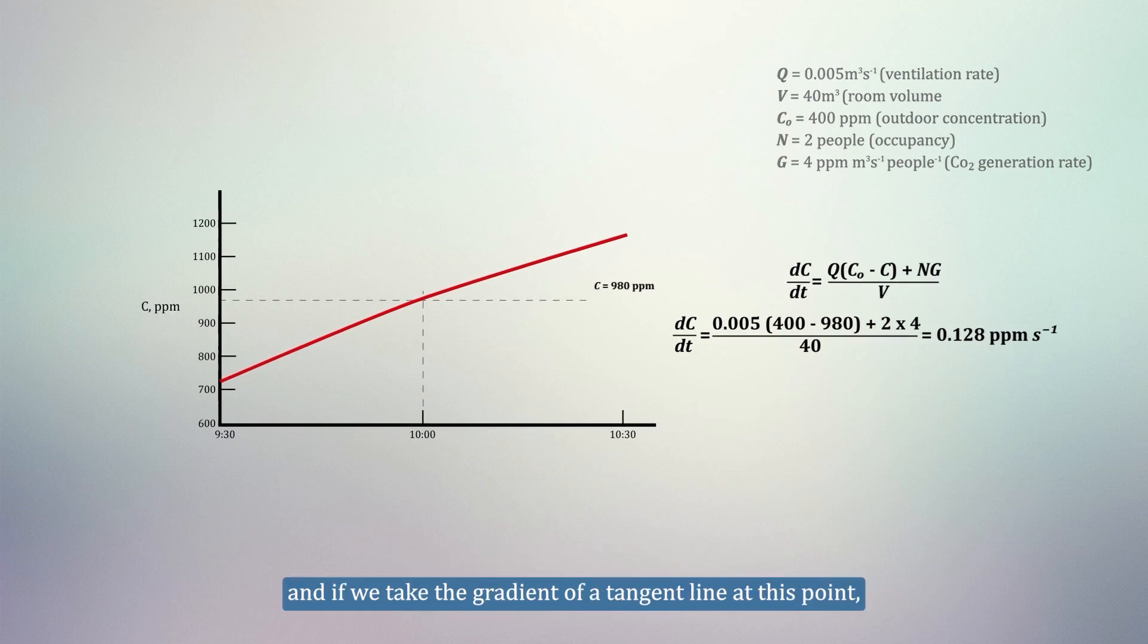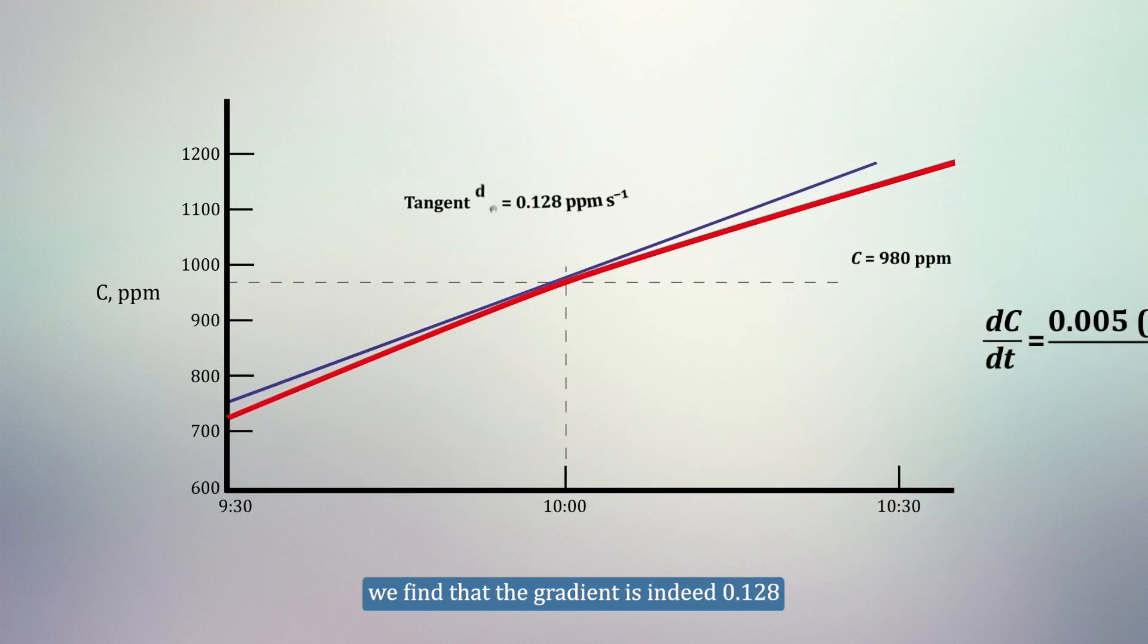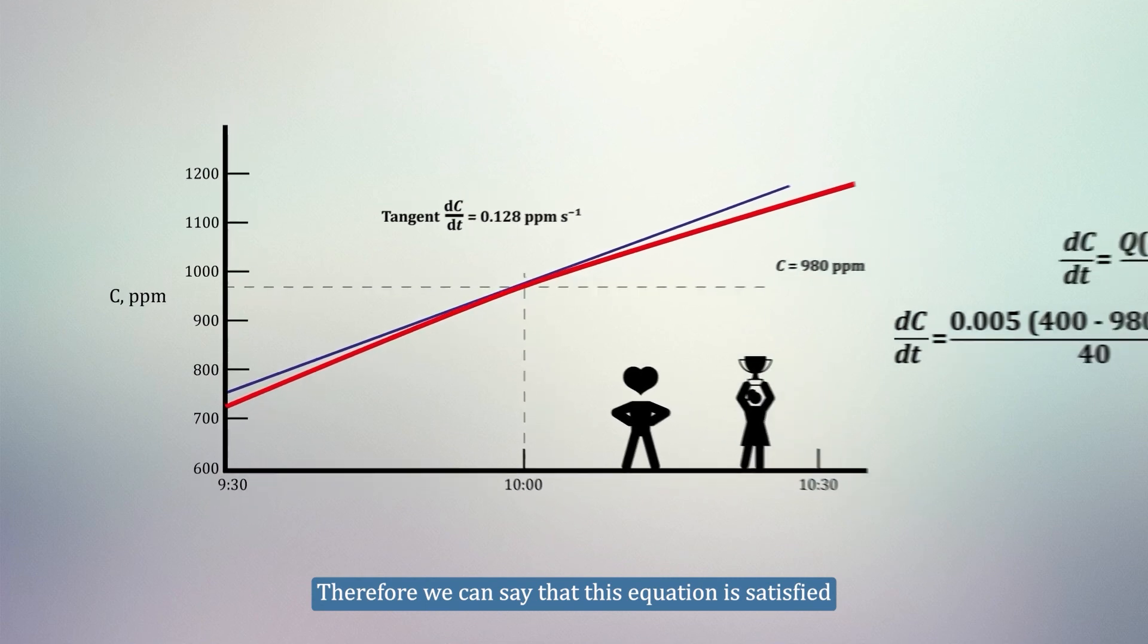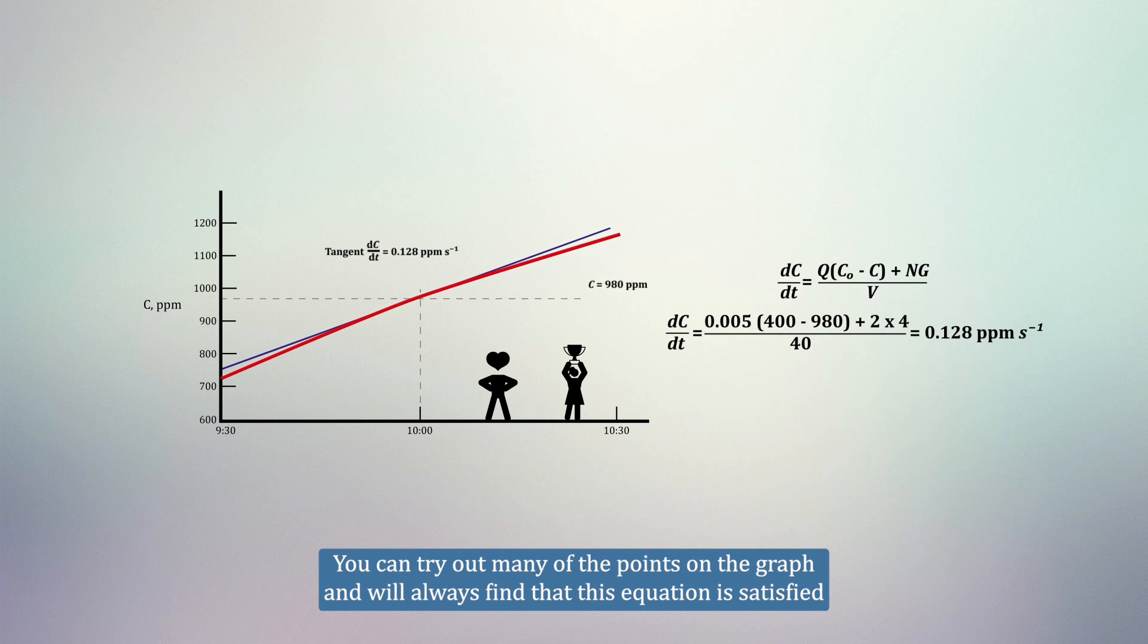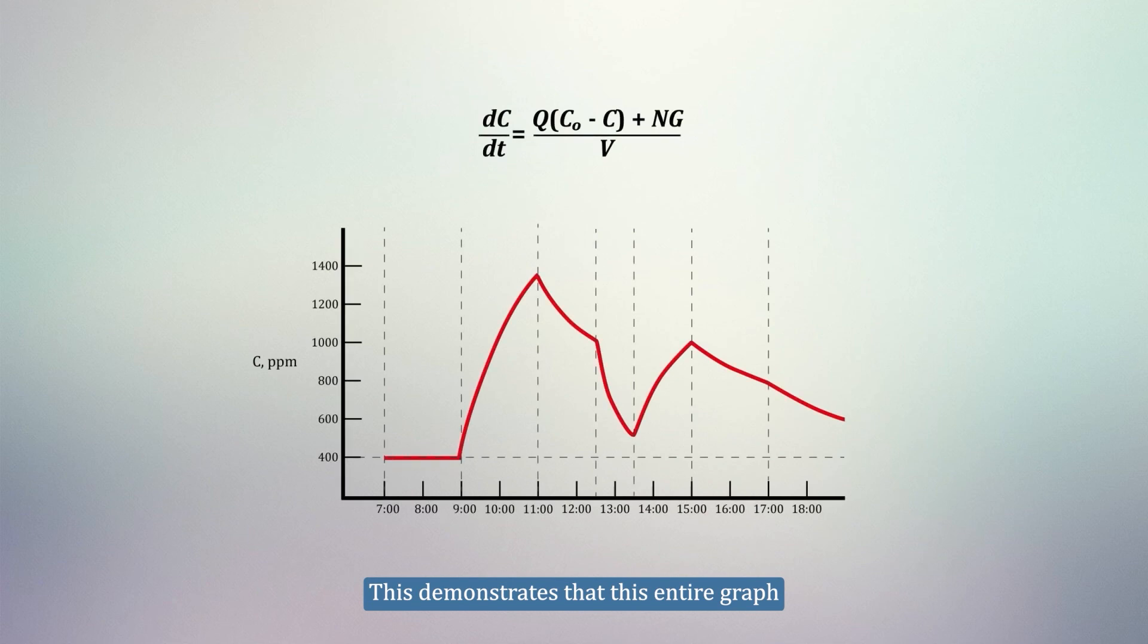And if we take the gradient on the tangent line at this point, we find that the gradient is indeed 0.128. Therefore, we can say that this equation is satisfied. You can try out many other points on the graph, and we'll always find that the equation is satisfied. This demonstrates that this entire graph, with all of its seemingly complex regions, is fully governed by just one equation.